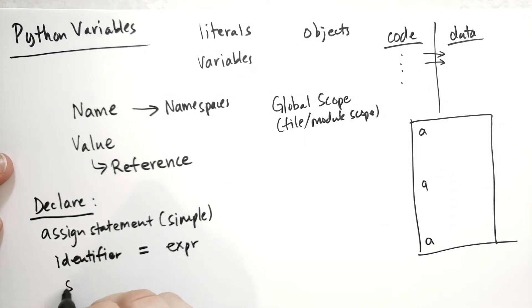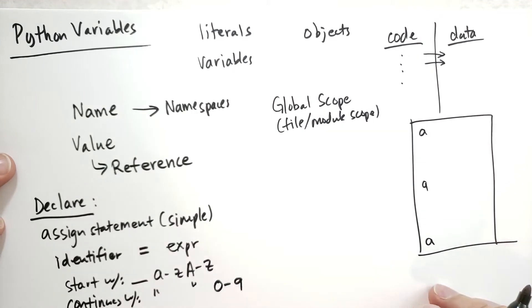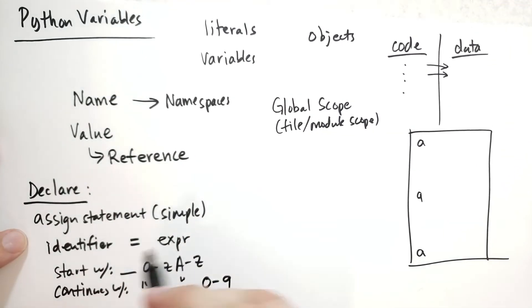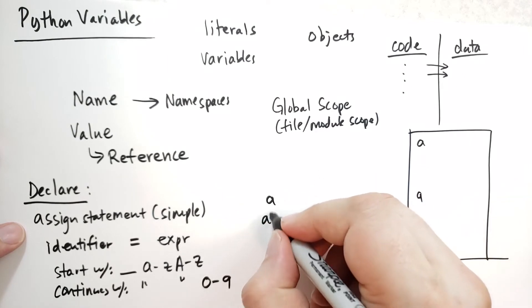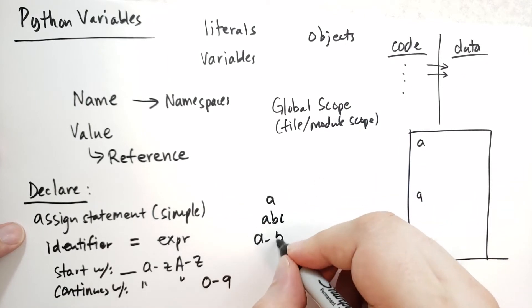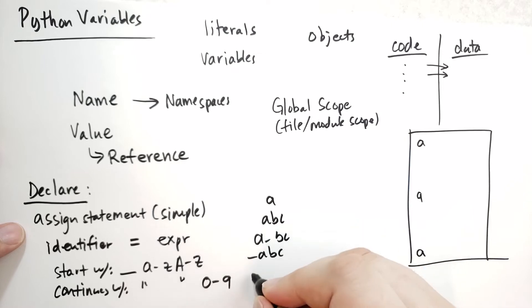And the identifier can start with underscore. It can be A through Z. It can be capital A through Z. And then it can continue with the same, so underscore, A through Z, capital A through Z. And you can also have numbers in it. So a couple of examples of identifiers that are appropriate: We can have A as an identifier. We can have A, B, C. A underscore B, C. The underscore can go in front. We can have numbers as long as the numbers don't start off.